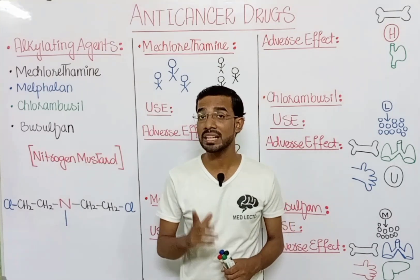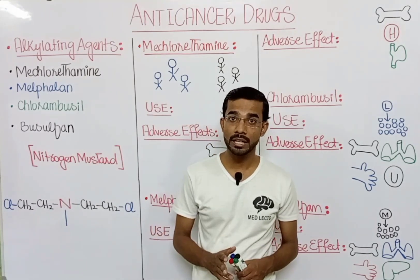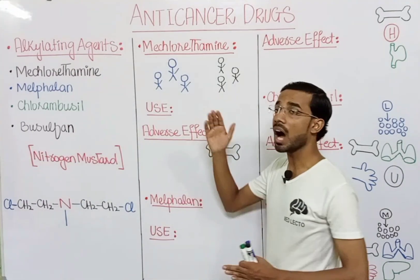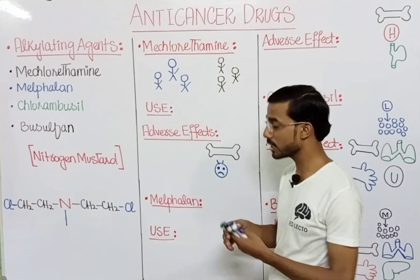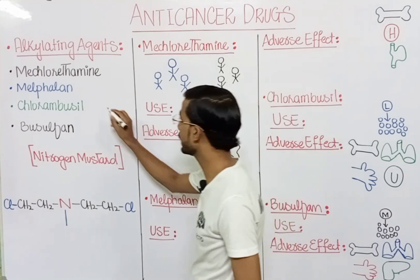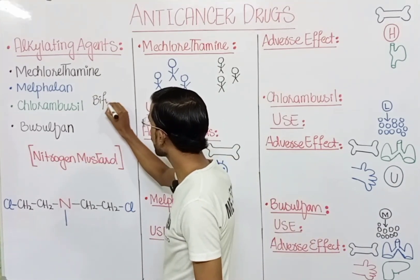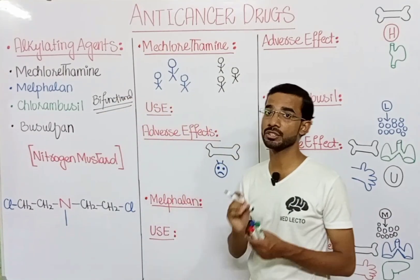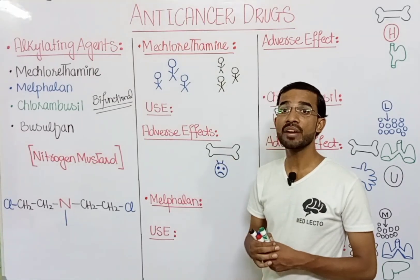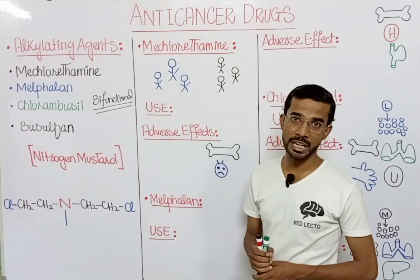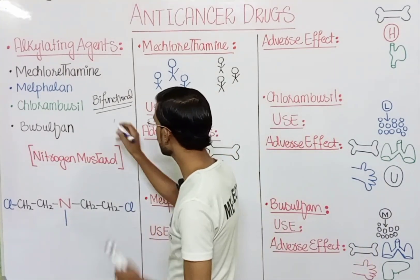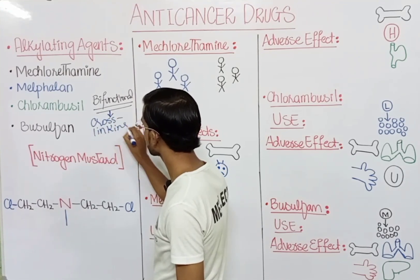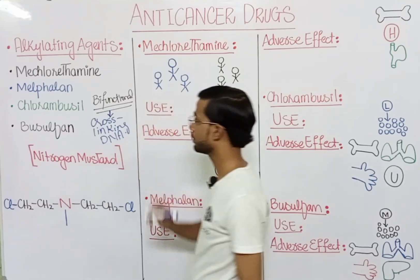In this lecture, we will discuss specifically four alkylating agents: mechlorethamine, busulfan, melphalan, and chlorambucil. The common thing between all these drugs is that they are bifunctional alkylating agents, having two major functional groups. That's why they form cross-linking between DNA molecules.